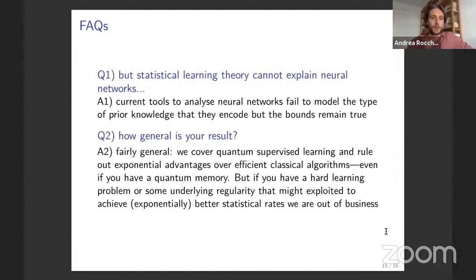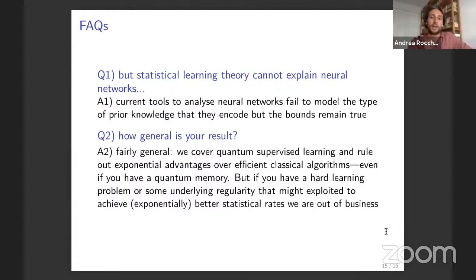A frequently asked question: statistical learning theory cannot really explain neural networks. I agree that current tools fail to account for why neural networks work. However, this seems more a problem of not having good mathematical ways to describe the prior information that neural networks encode about the problems they tackle. I want to stress that the bounds presented and the fundamental theorem of statistical learning do remain true.